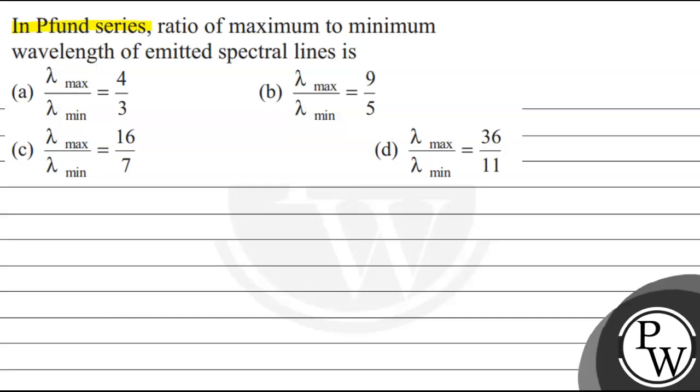Hello, let's read the question. In Pfund series, ratio of maximum to minimum wavelength of emitted spectral lines is: Option A: lambda max upon lambda minimum equals 4 upon 3. Option B: lambda max upon lambda minimum equals 9 upon 5.